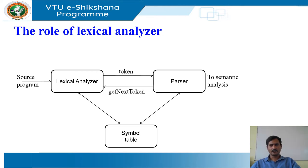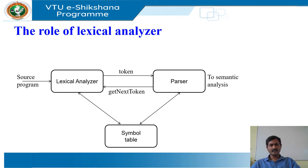These interactions are shown in the figure. Commonly, the interaction is implemented in a way that the parser calls the lexical analyzer. The parser, by this call with the get next token command, makes the lexical analyzer read characters from its input until it can identify the next lexeme and produce the next token, which it returns to the parser.